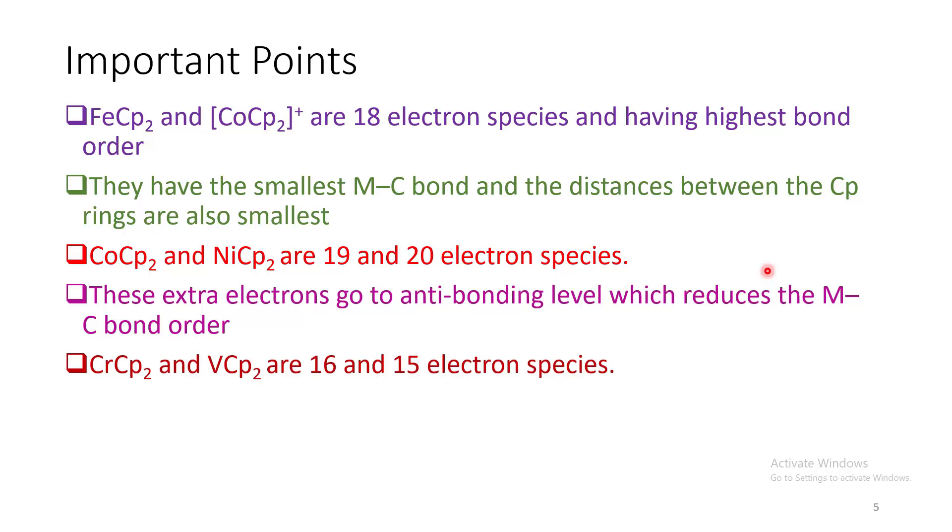Now in chromium and vanadium, the opposite thing happens. They have less number of electrons. So some of the bonding and non-bonding levels are now vacant. As a result, here also the bond order is less.